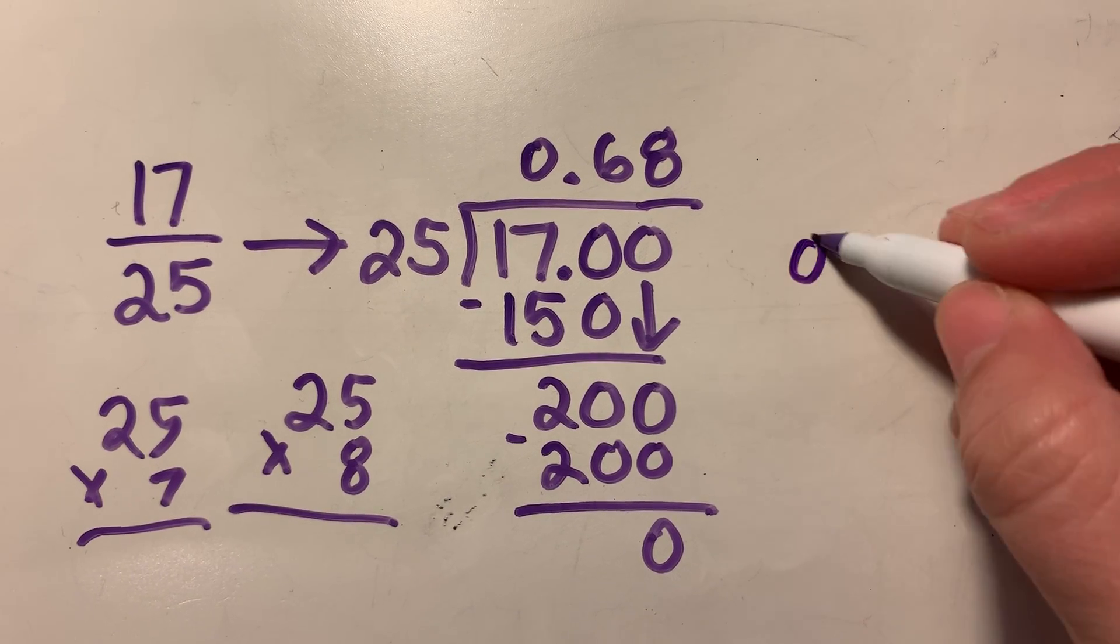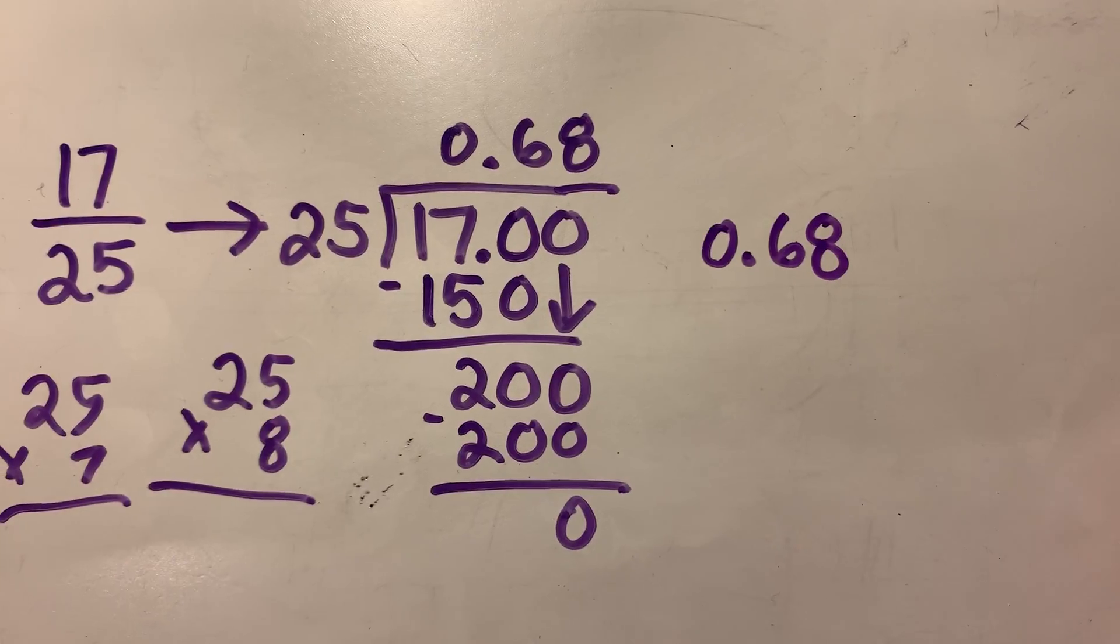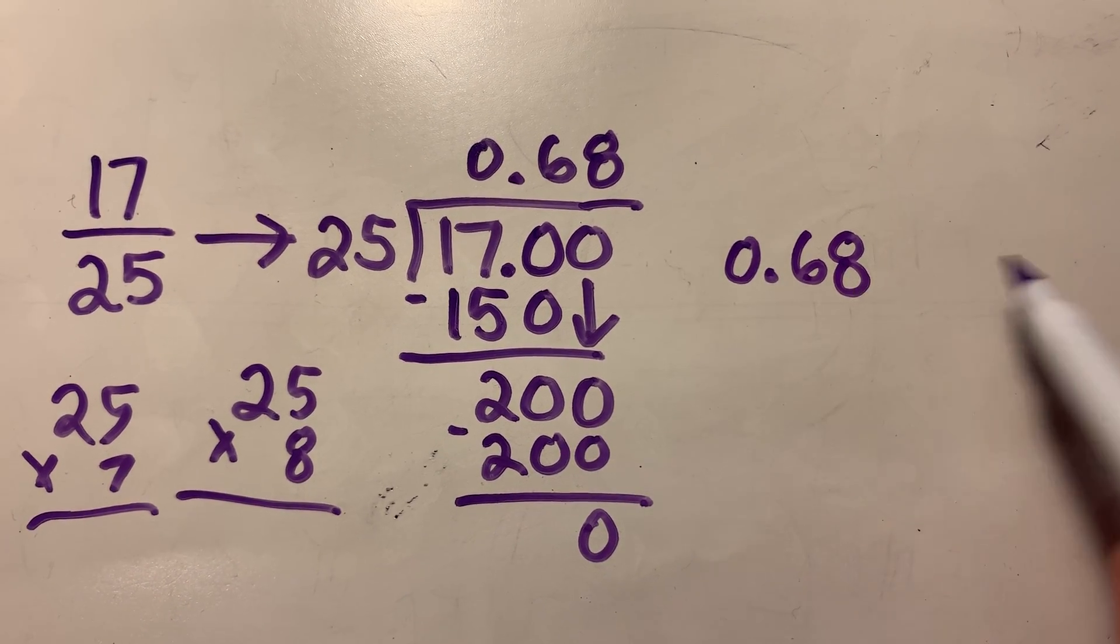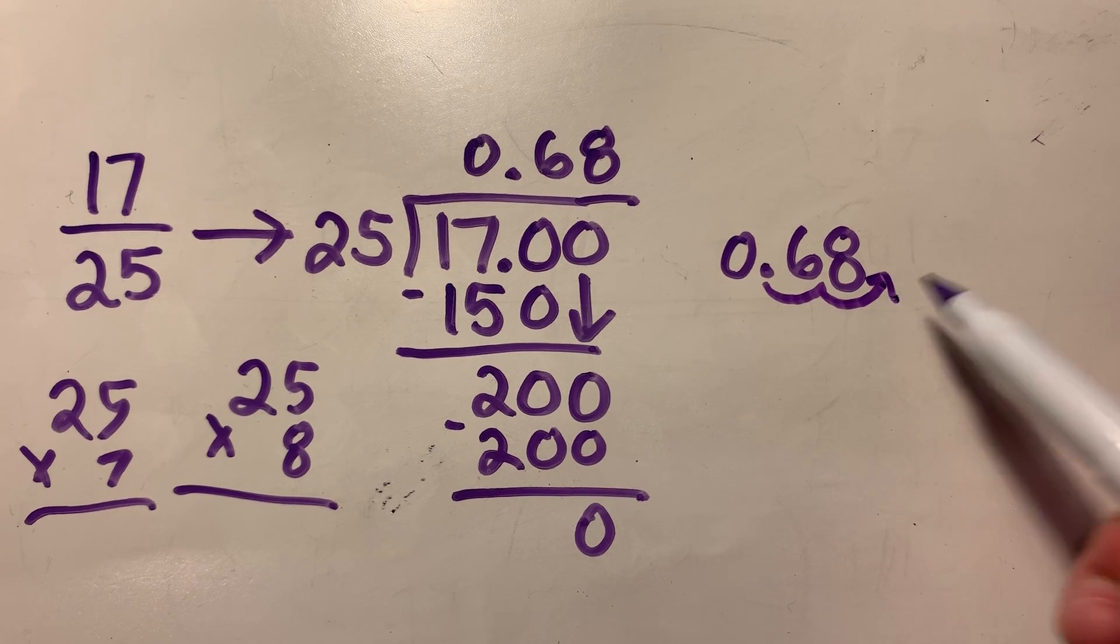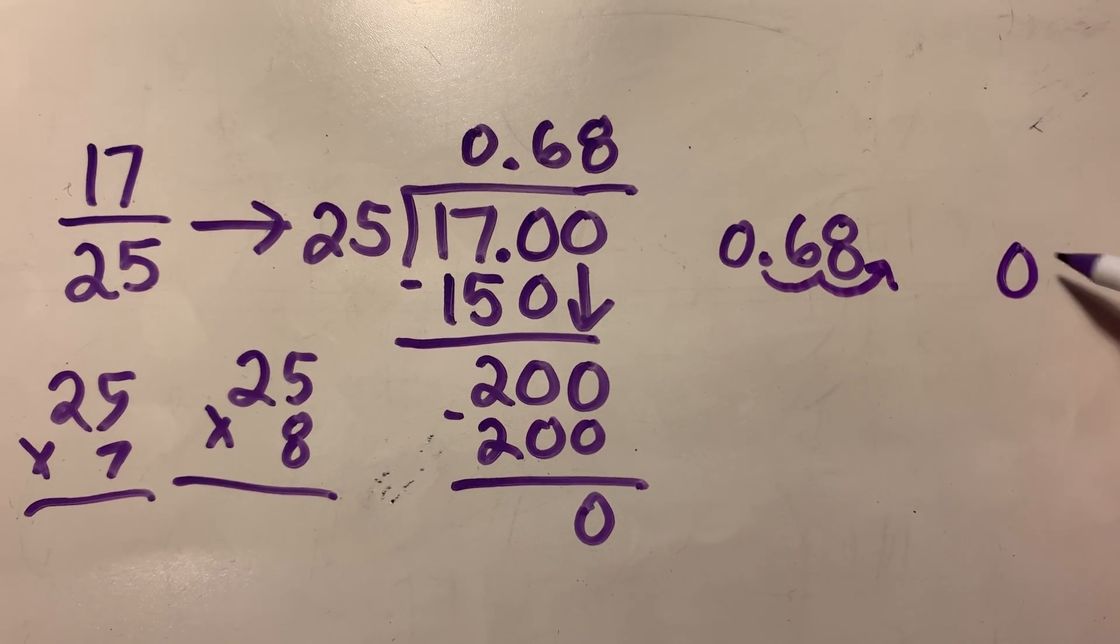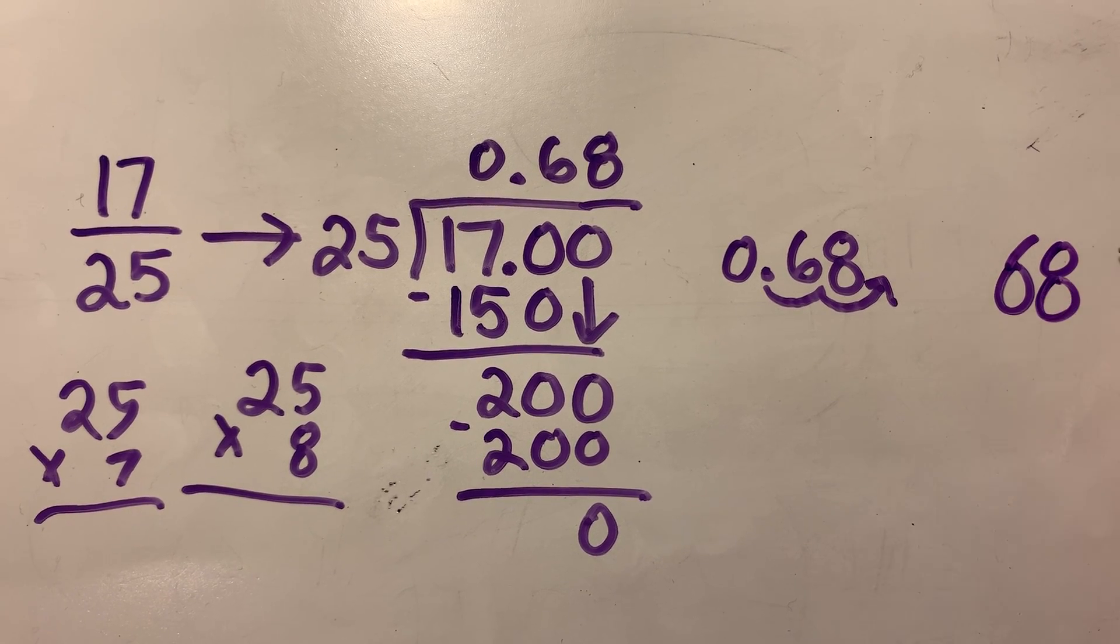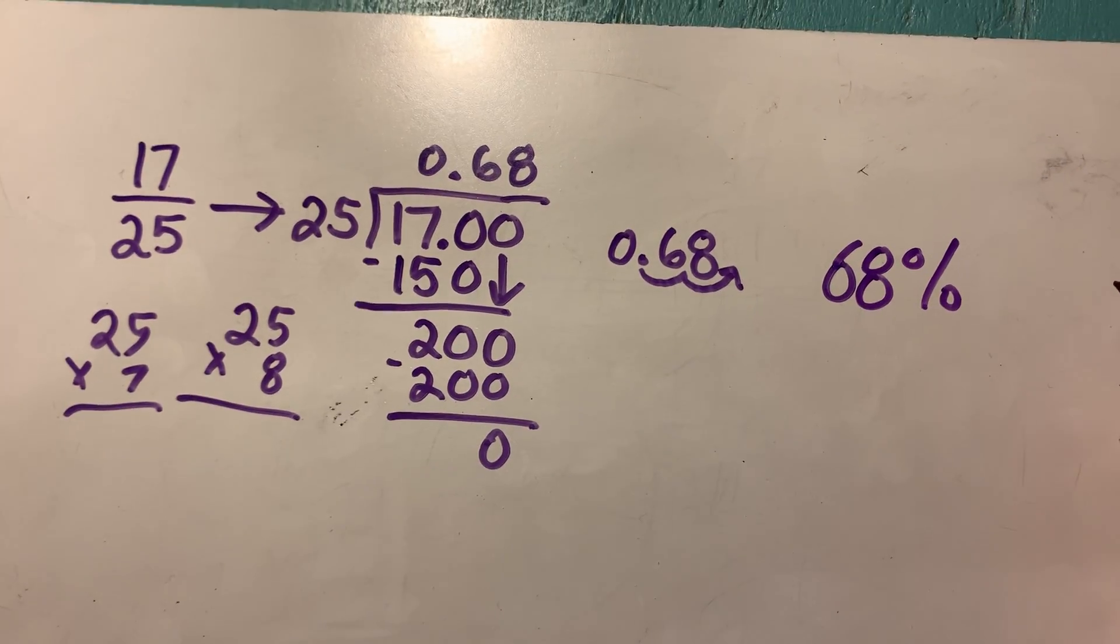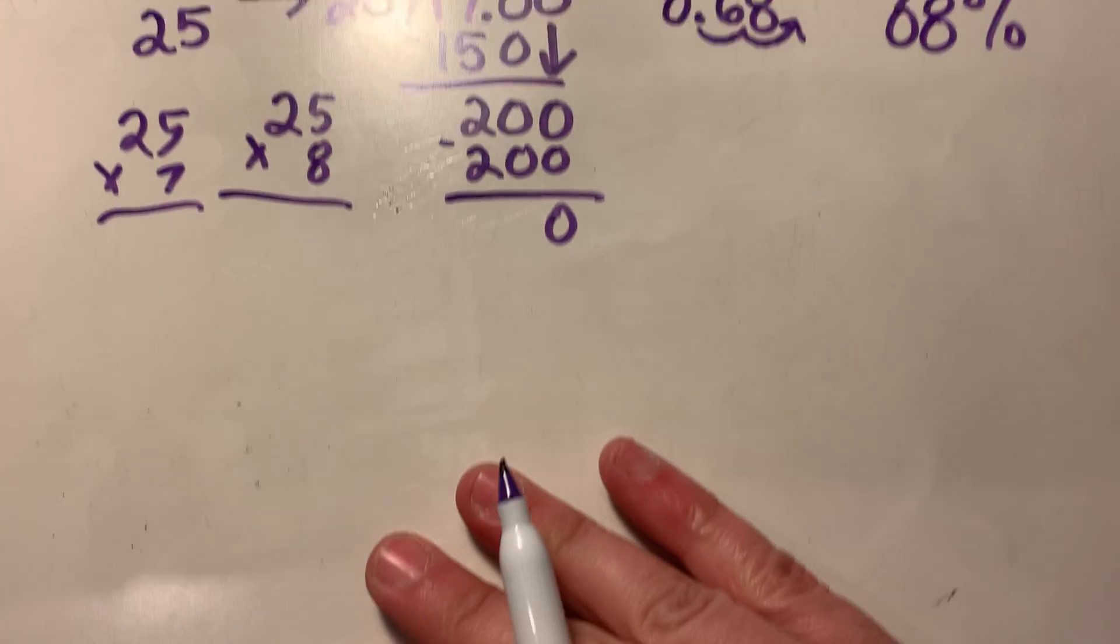So we just found out what 17 25ths is as a decimal. And just as a reminder to turn a decimal into a percent, we move the decimal place over once, twice over here. I just got ahead of myself. 68% is our answer. I'll do one more.